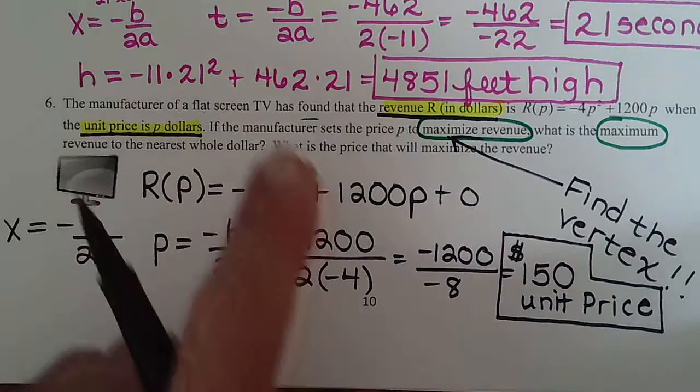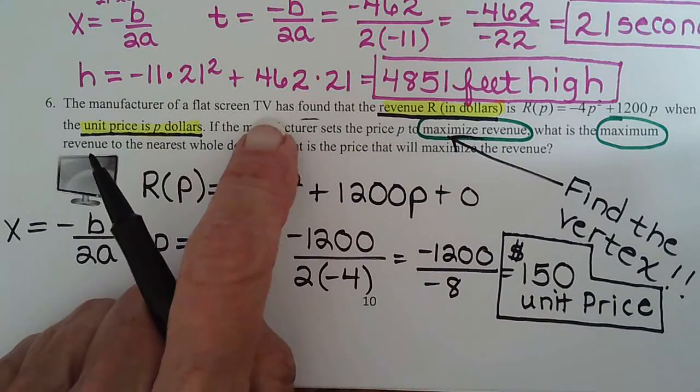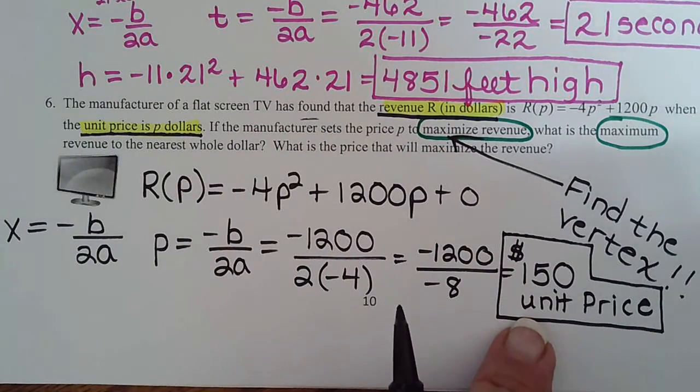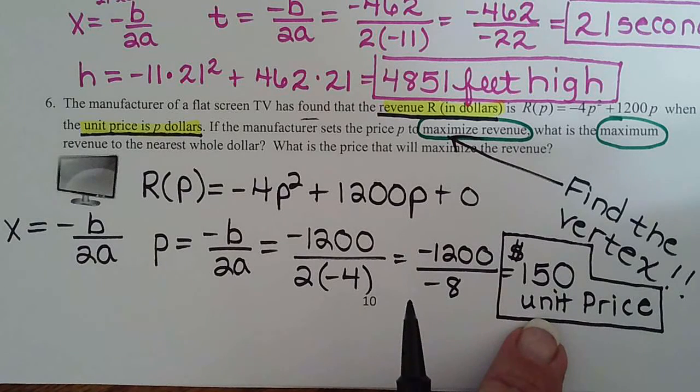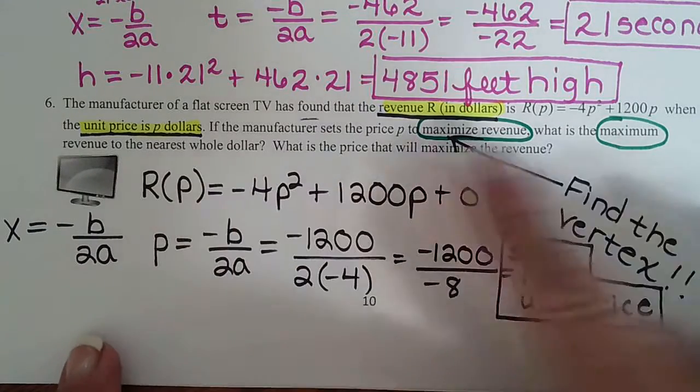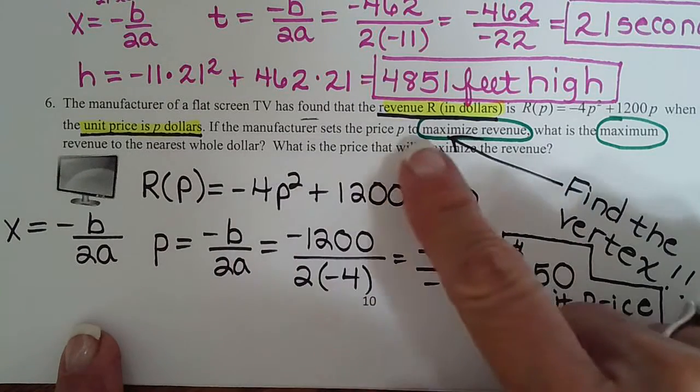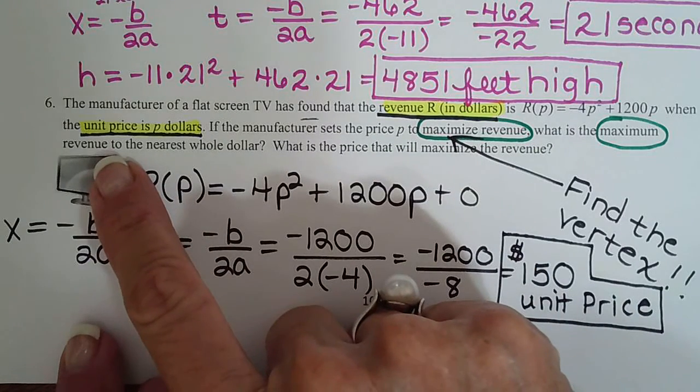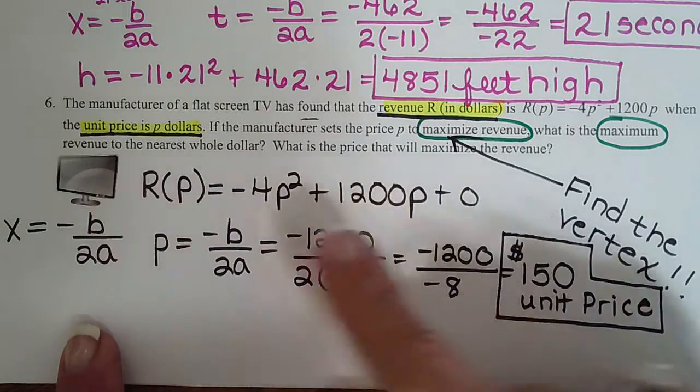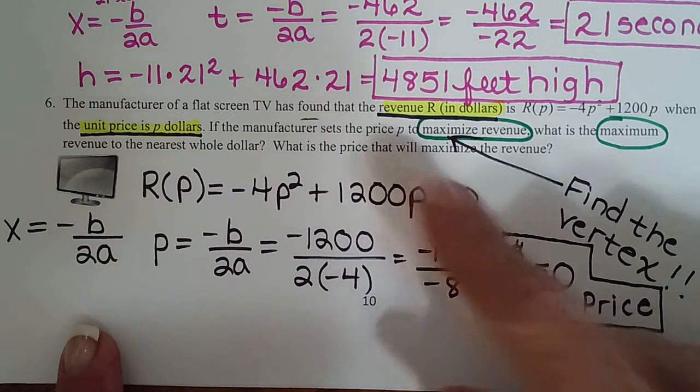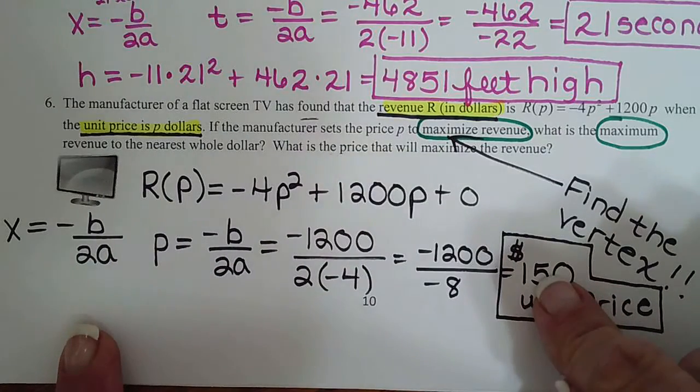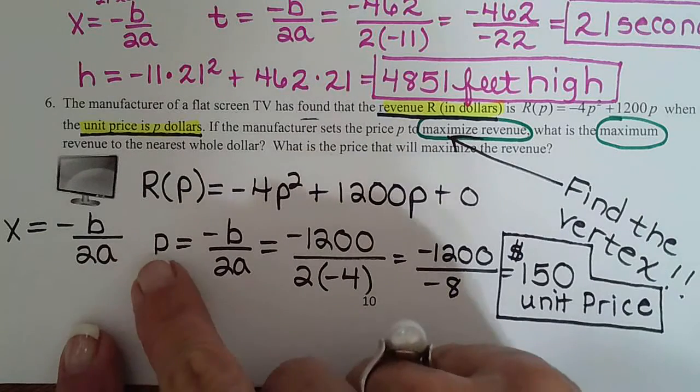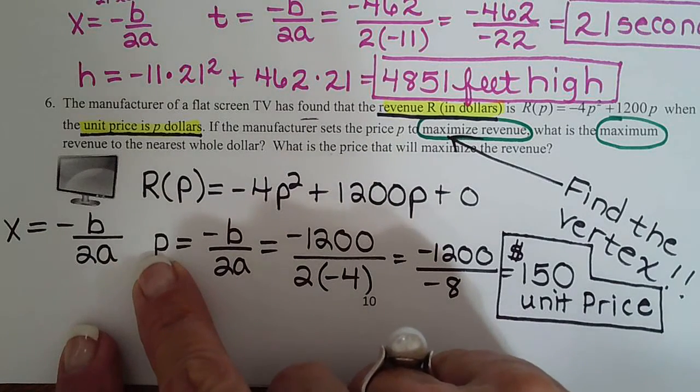So now we have to decide what the label is. What does p stand for? P is the unit price in dollars, so $150 is the unit price. Whatever we're manufacturing, we're manufacturing TVs. So in order to get the most money possible, because if you price something too high then no one buys it, you price something too low you don't make a good profit. So this would be the profit that would sell the most TVs and make the manufacturer the most money. So that answers - what is the maximum revenue? Is that the answer to that question? No. What is the price? Yes. So see how we just answered the second question first? So they don't always ask it in the right order. That's why we use these letters. P is for price, R is for revenue.